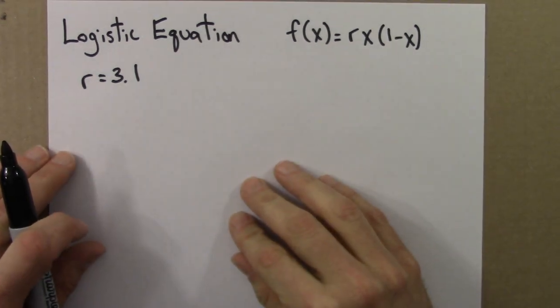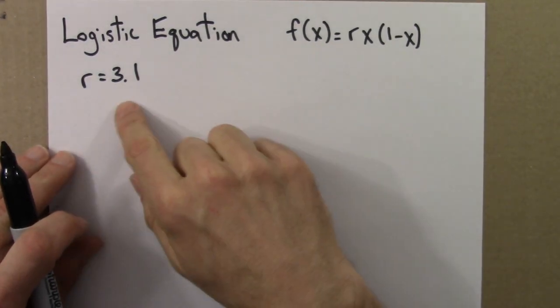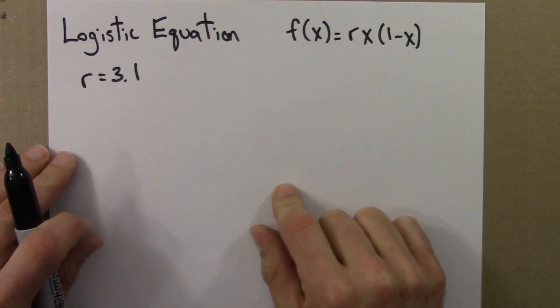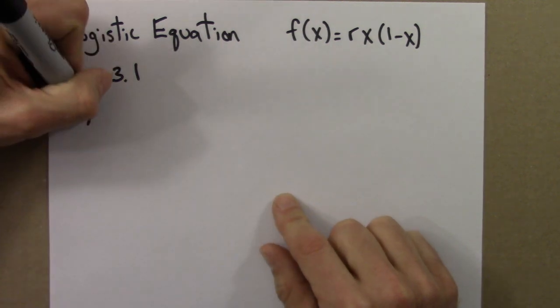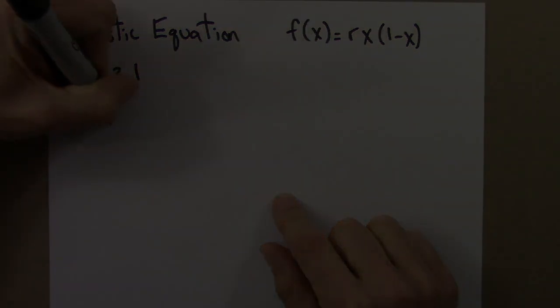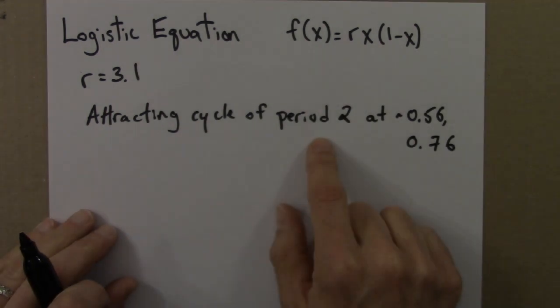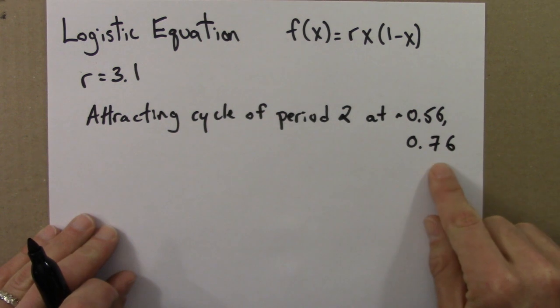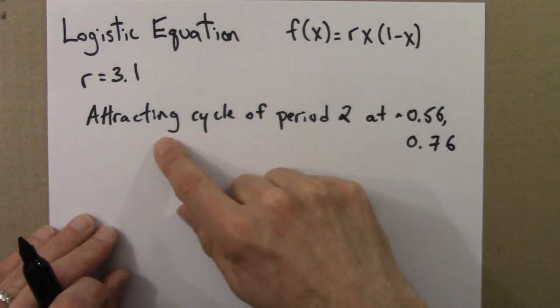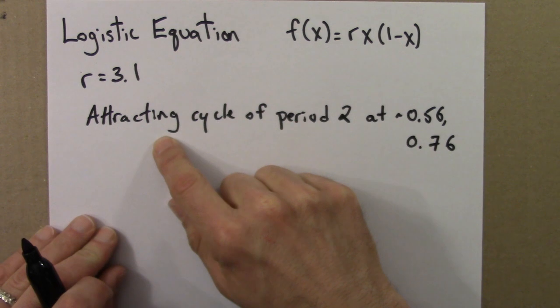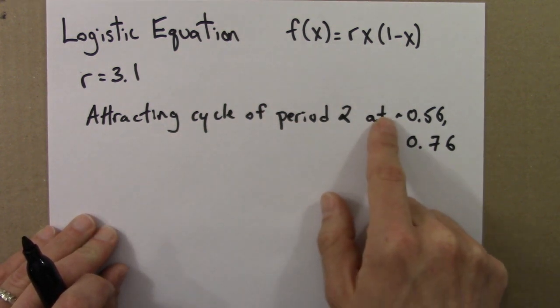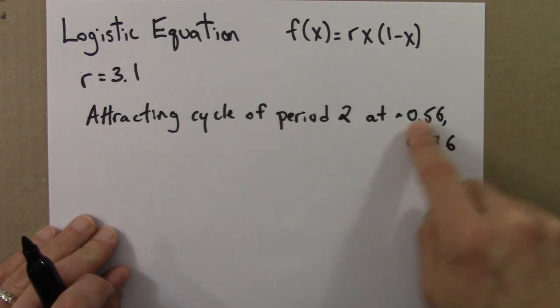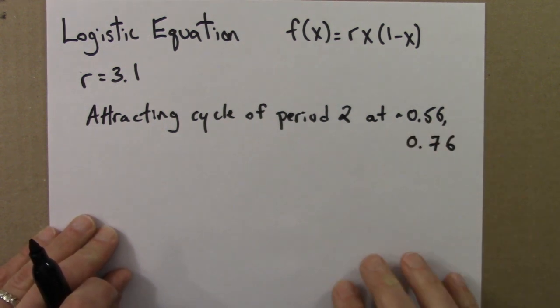Let's summarize the behavior of the logistic equation for r equals 3.1. We found that there is an attracting cycle of period 2 and the values it cycled between were around 0.56 and 0.76. It's attracting because nearby orbits are pulled into it. We could also say that it's stable. If the population was in this cycle and got moved a little bit away from it, it would return back to this cycle. So it's stable just like fixed points are stable.